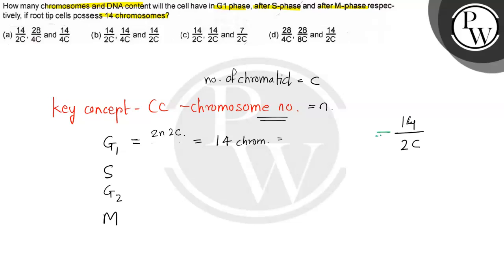So this will be in G1 phase. What happens in S phase? Chromosome number will be the same, but here will be 4C.